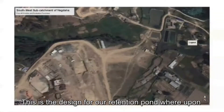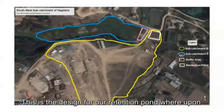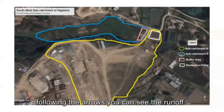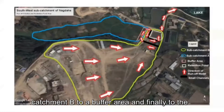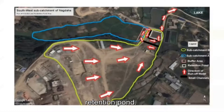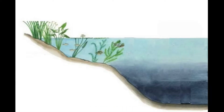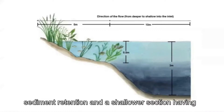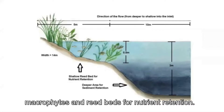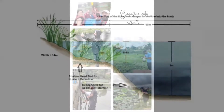This is the design for our retention pond. Following the arrows, you can see the runoff flowing from subcatchment B to a buffer area and finally to the retention pond. The retention pond will have a deeper section to allow for sediment retention and a shallower section with macrophytes for nutrient retention.